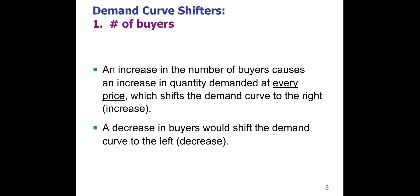You will need to memorize these. The first demand curve shifter is the number of buyers. If you have a particular city as a marketplace for a particular product, and more people move to that city, you now have more potential buyers who want to buy certain products — that will increase the number of buyers. This shifts the entire demand line to the right. If people leave the city, you'll have fewer potential buyers, and that entire demand line will shift to the left.